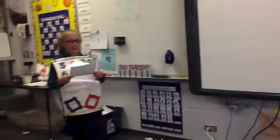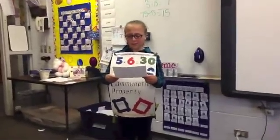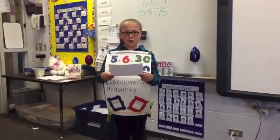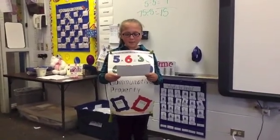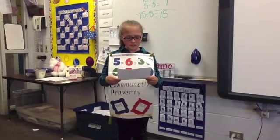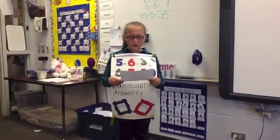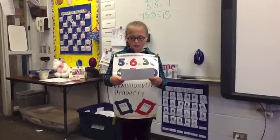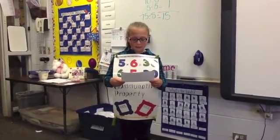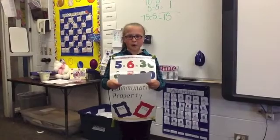Is it 3 times 6 or 6 times 3? Today I'm going to tell you all about the commutative property. Commutative property is when you can swap the same numbers and still get the same answer. An example is 5 times 6 equals 30, and 6 times 5 equals 30. If you know 3 times 8 equals 24, you also have to know 8 times 3 equals 24.